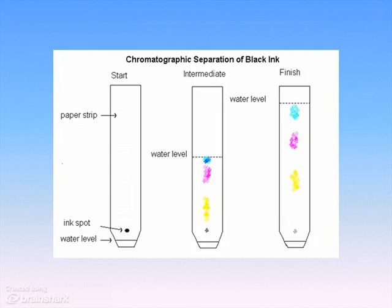The classic example is using ink. Dark ink is often a mixture of different pigments. So you take a strip of paper, put a little ink spot on it, and dip it in a little bit of water. As the water wicks through and up the paper strip, it liberates and moves the molecules — the different pigments of the ink — as it moves through the paper. You can see the water level has moved halfway up the strip and it's started to separate the individual pigments. At the finish, the water level has moved almost all the way up to the top, and has fully separated the three different pigments in that one ink spot.